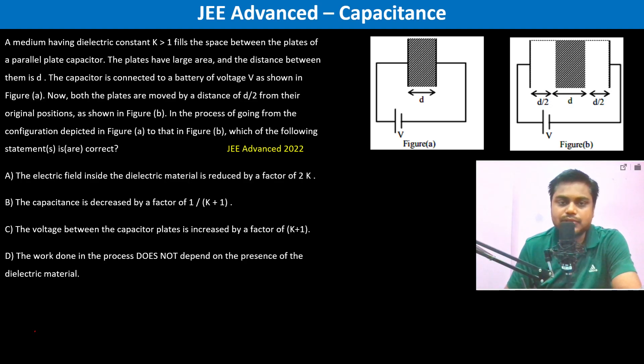A dielectric constant k greater than 1 fills the space between the plates. The capacitor is separated by distance d/2 and d/2, so we can consider it as three separate capacitors.